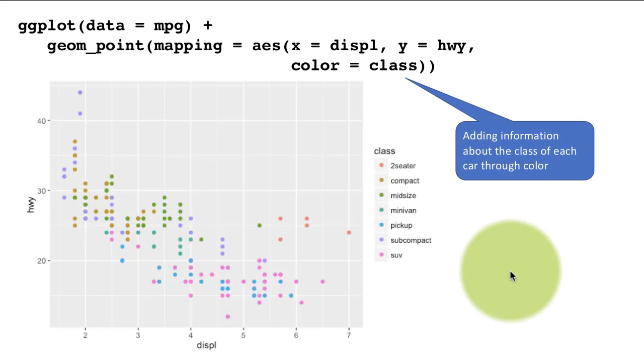So when you do that, your plot changes like this. So the points are still the same as before, but now the color of each of the points depends upon what class of car it is. And the system also added a legend here to indicate to us what color corresponds to what kind of class. So all this happened automatically all because we said color equals class.